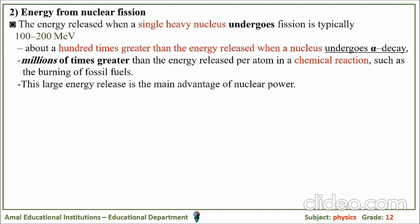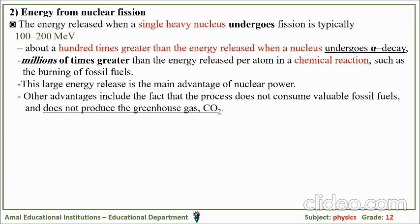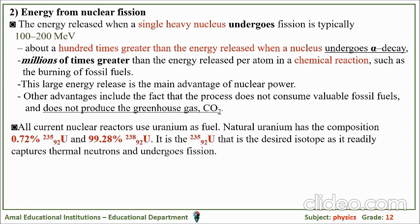This large energy release is the main advantage of nuclear power plants. Other advantages include the fact that the process does not consume valuable fossil fuels and does not produce the greenhouse gas carbon dioxide. All current nuclear reactors use uranium as fuel. Natural uranium has the composition 0.72% uranium-235 and 99.28% uranium-238. It is uranium-235 that is the desired isotope, ready to capture thermal neutrons and undergo fission.